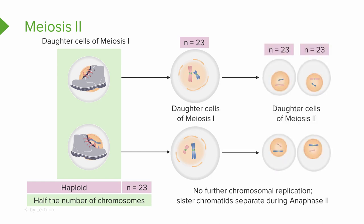In meiosis II, both of these cells are going to contain one set of sister chromatids. These will further divide much in the same way that cells divide in mitosis. The difference is the final daughter cells will each contain one set of 23 chromosomes instead of one set of 46 that you find in mitosis.